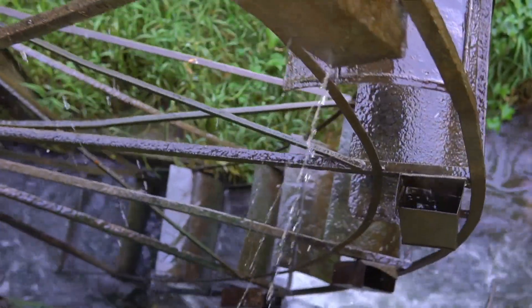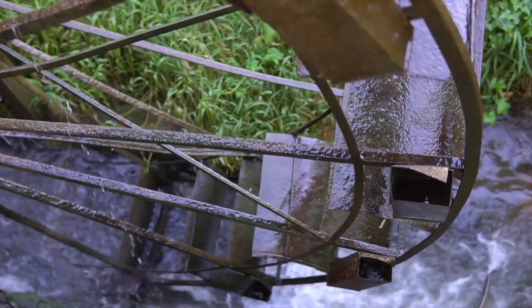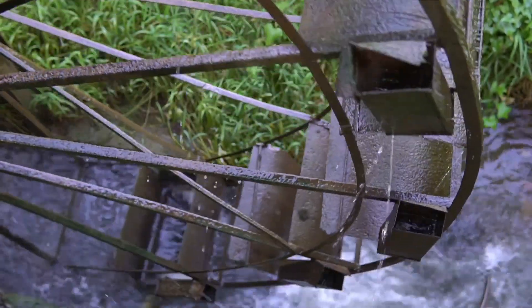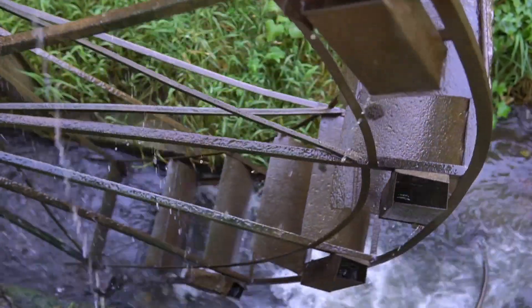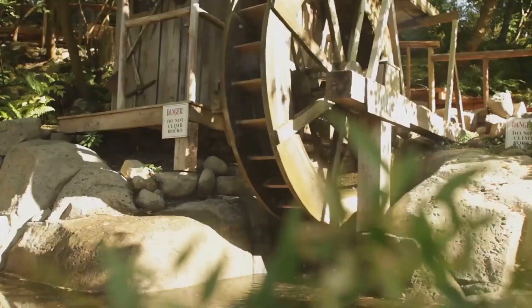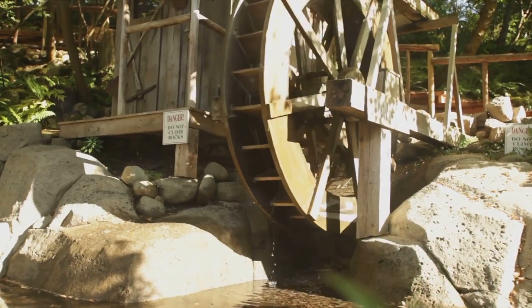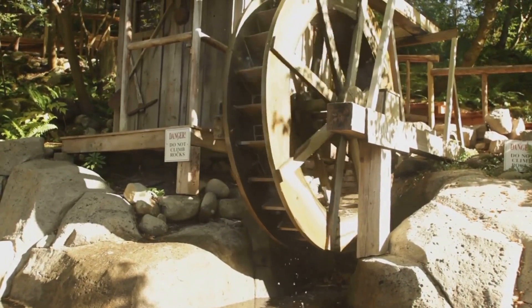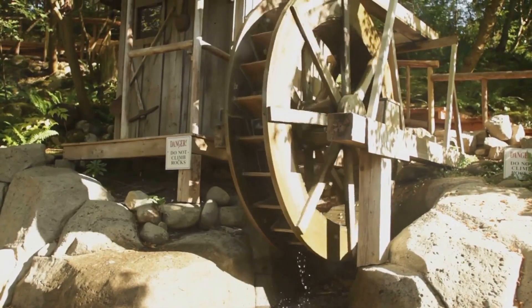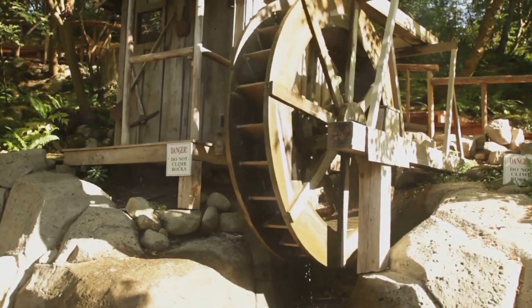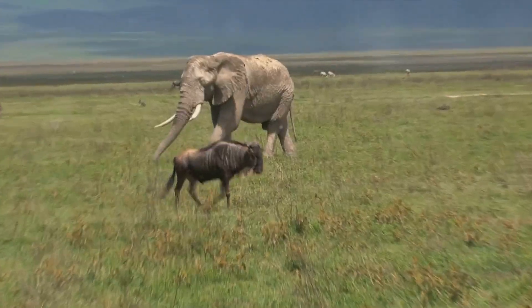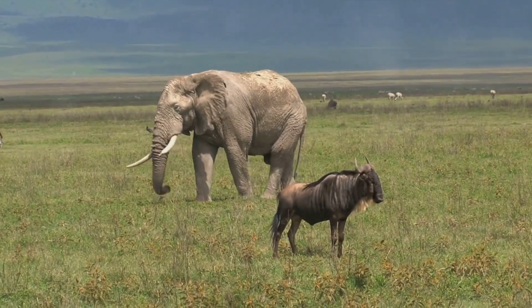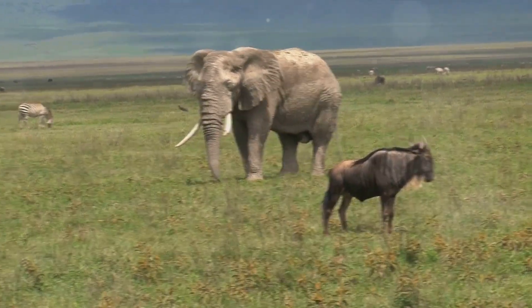But where does life fit into this picture? Well, life in all its complex, structured glory exists and thrives within this entropy gradient. Imagine a water wheel in our metaphorical river. As the water, or energy, flows from high to low, it turns the wheel, powering whatever the wheel is connected to. Similarly, life harnesses the energy flow from the Sun, using it to power all the complex structures and processes that constitute life itself. From the simplest plants performing photosynthesis to the most complex human inventions, all are possible because of this gradient.